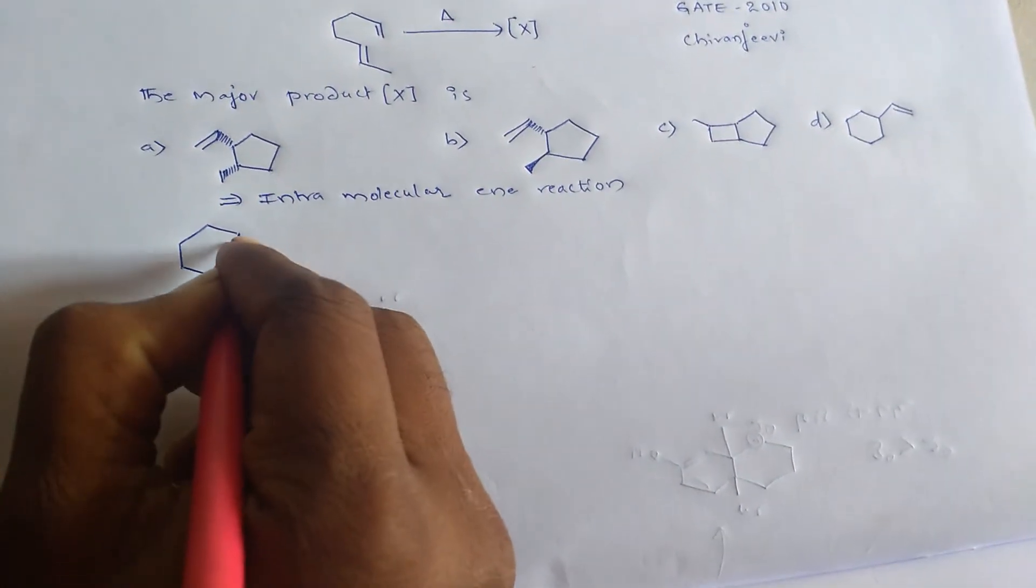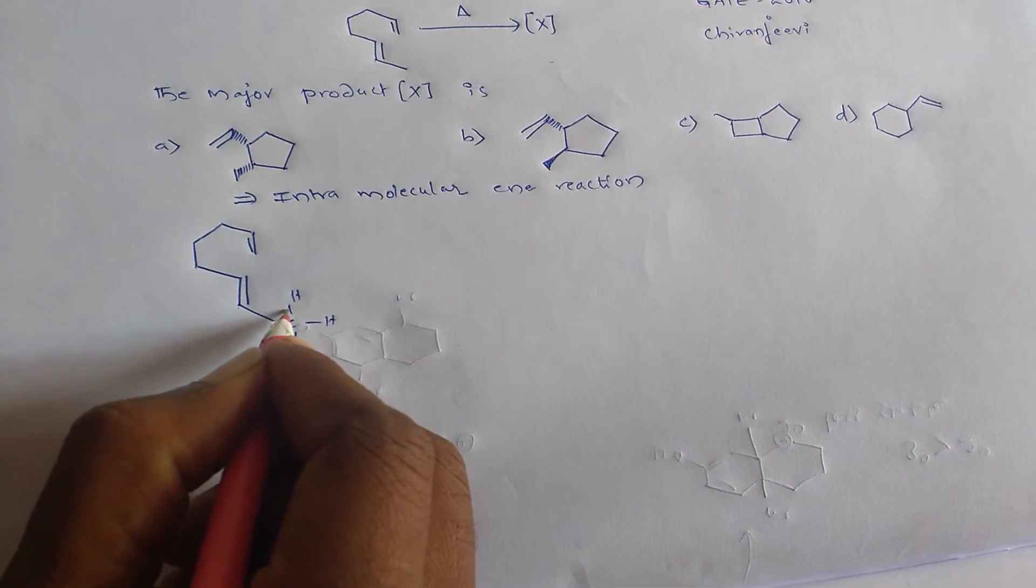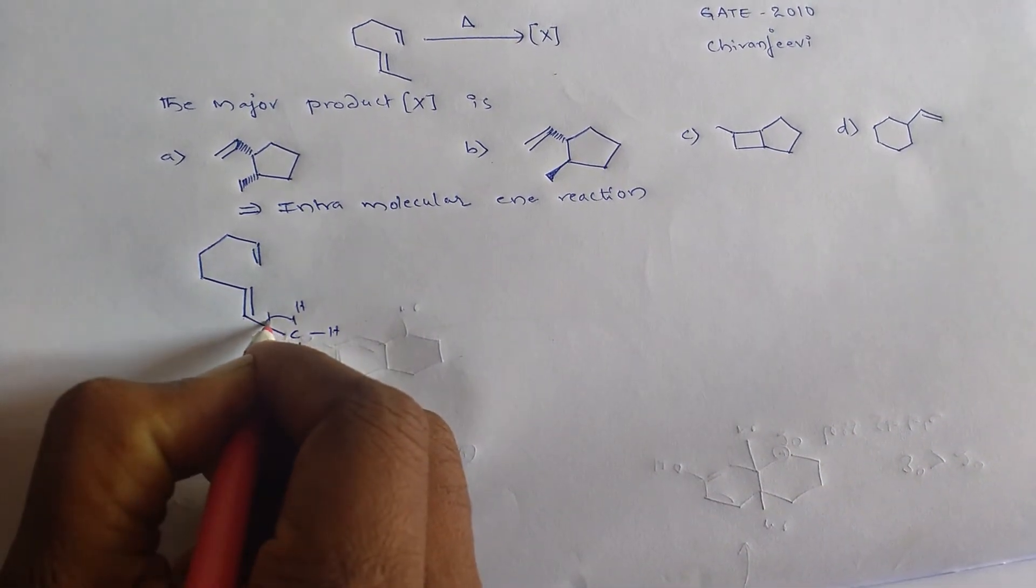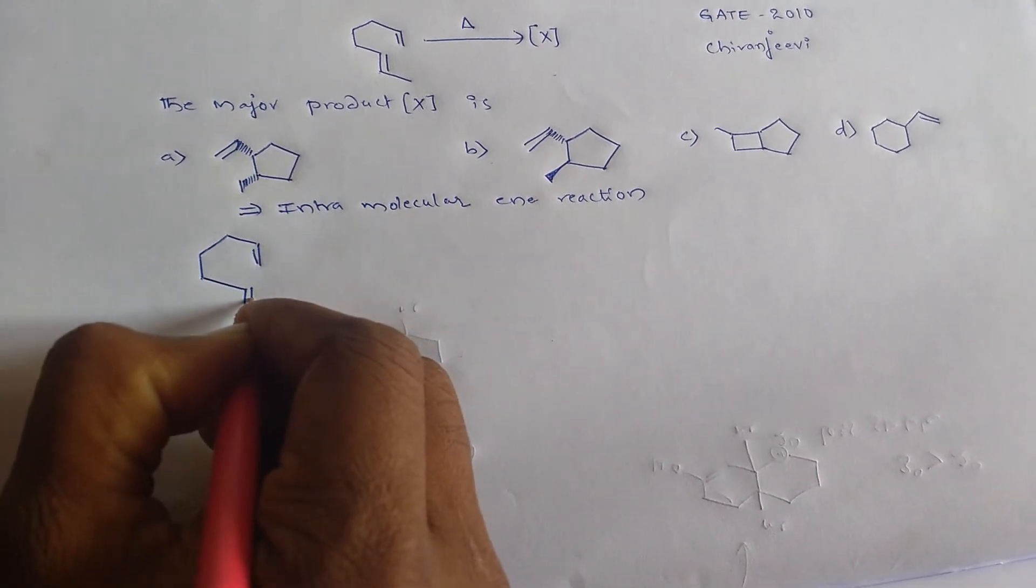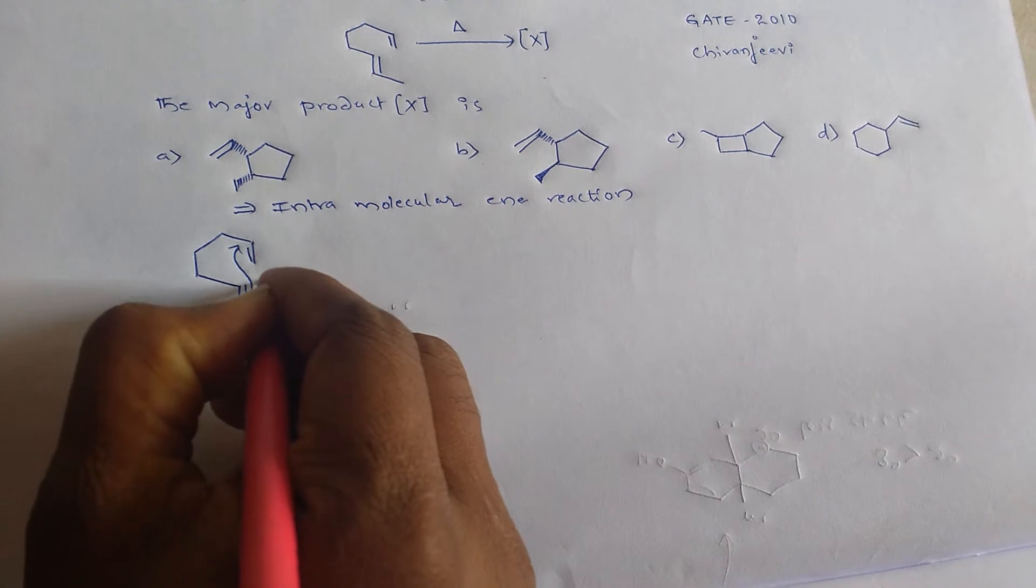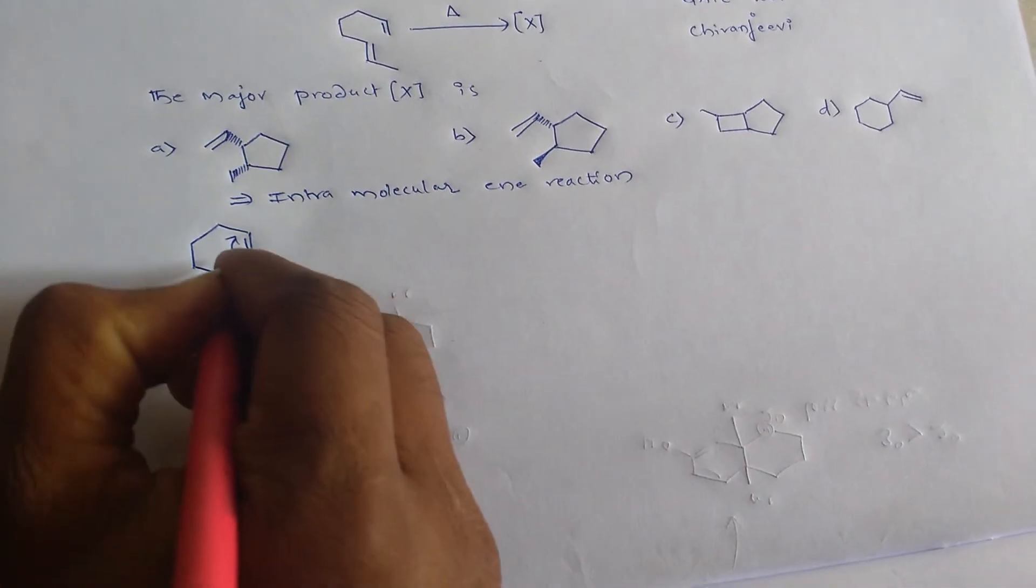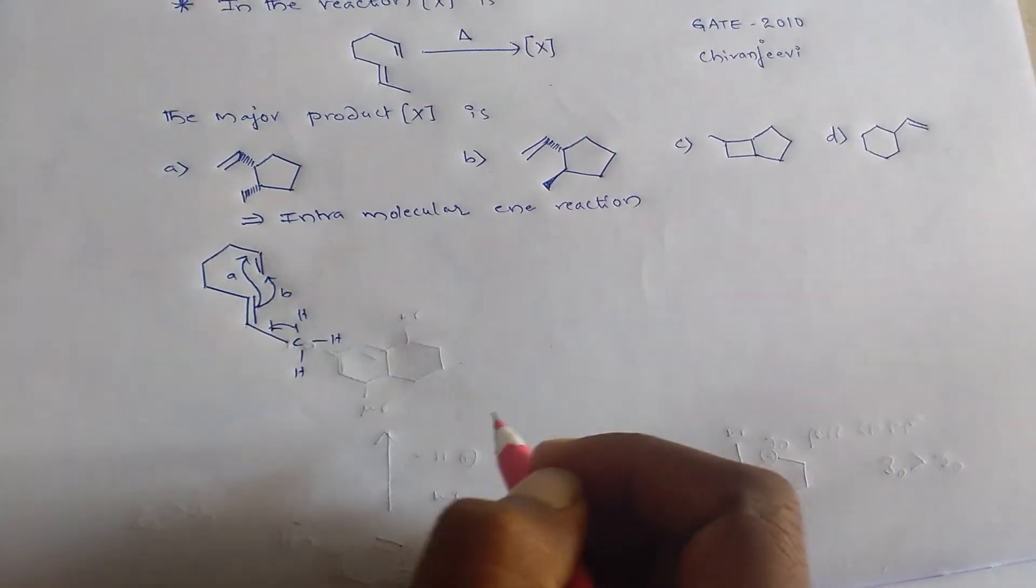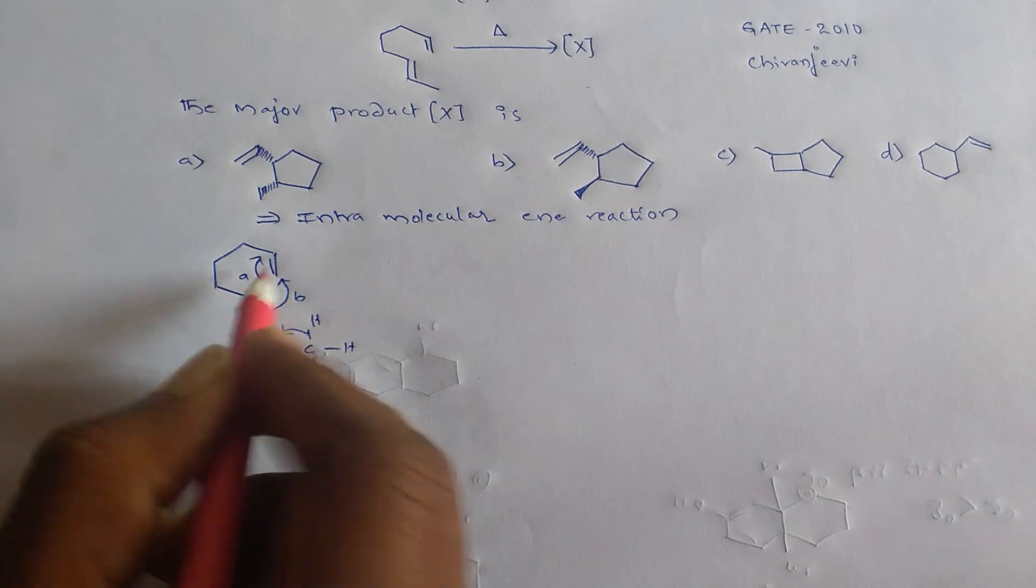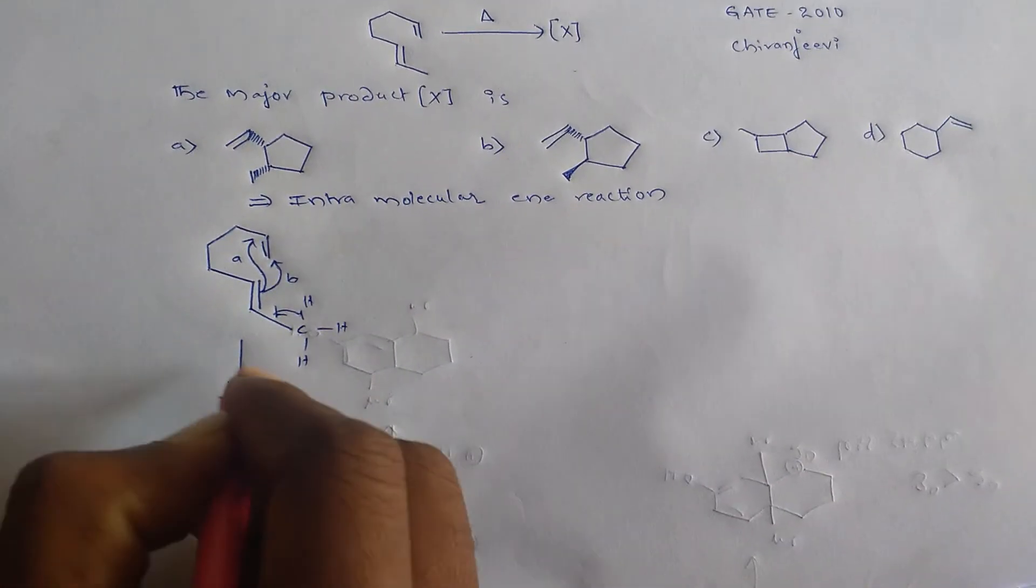Then ene reaction... These are the centers. This is A, this is B. We have two possibilities. So I am writing here A.